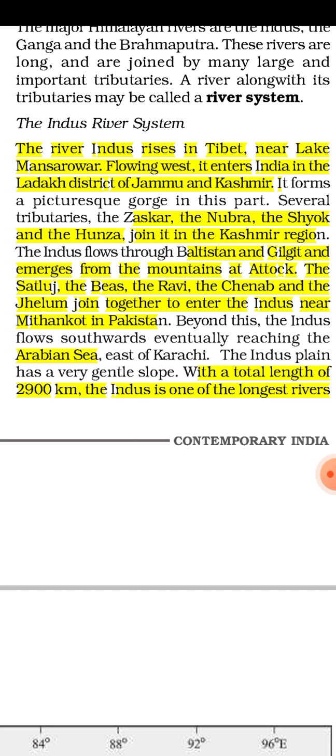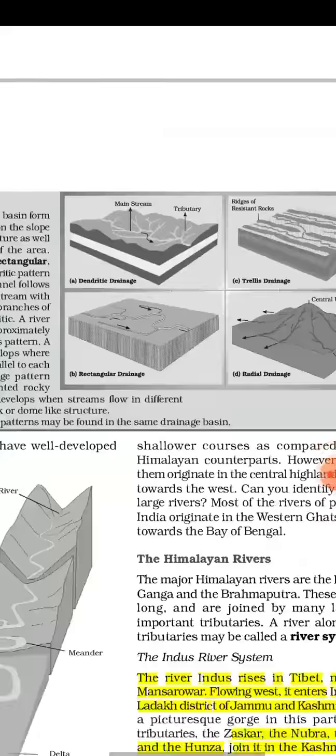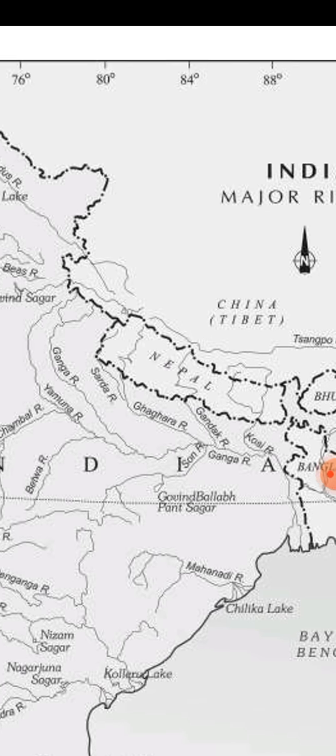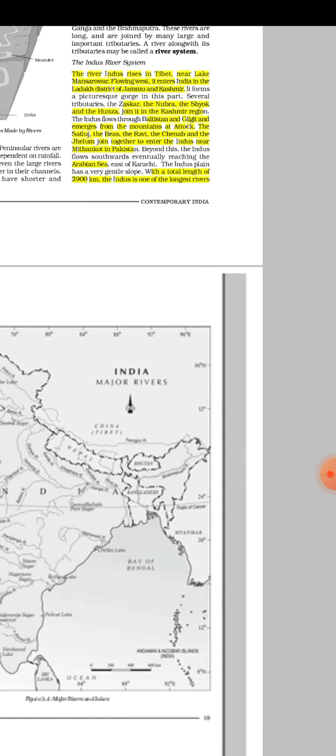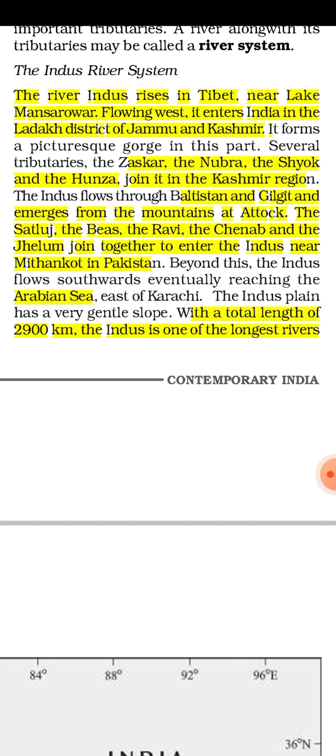The river Indus rises in Tibet near Lake Mansarovar. This is the origin of the Indus river. From Mansarovar lake in Tibet, the Indus river is originated and flows westward after originating from there.